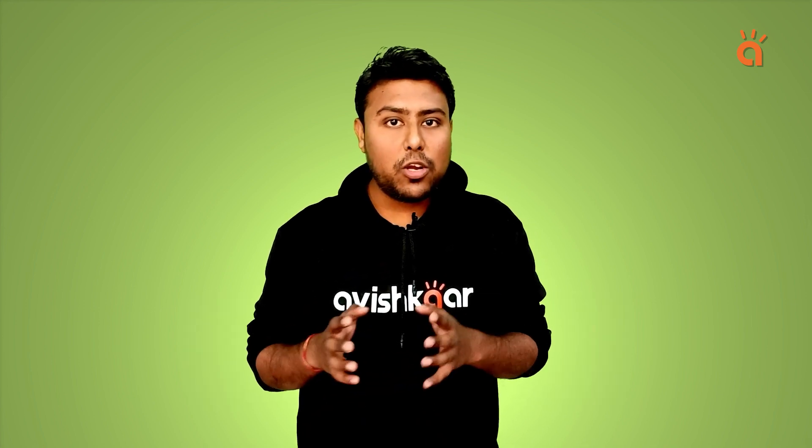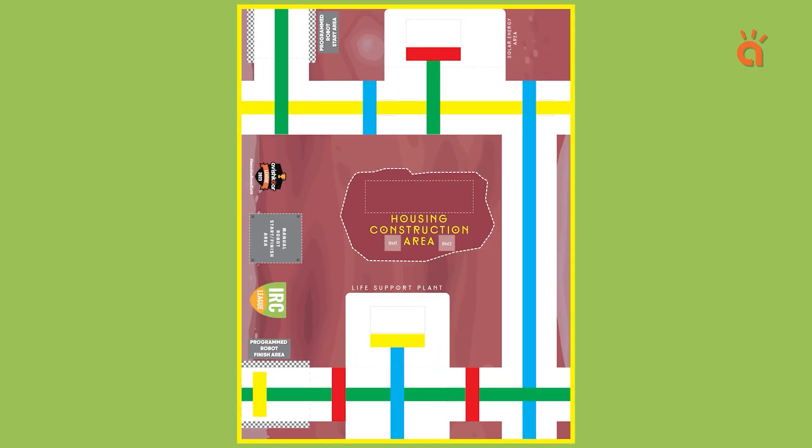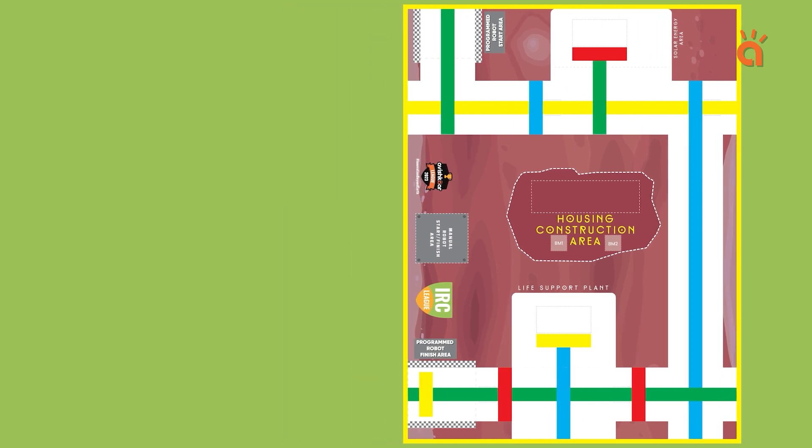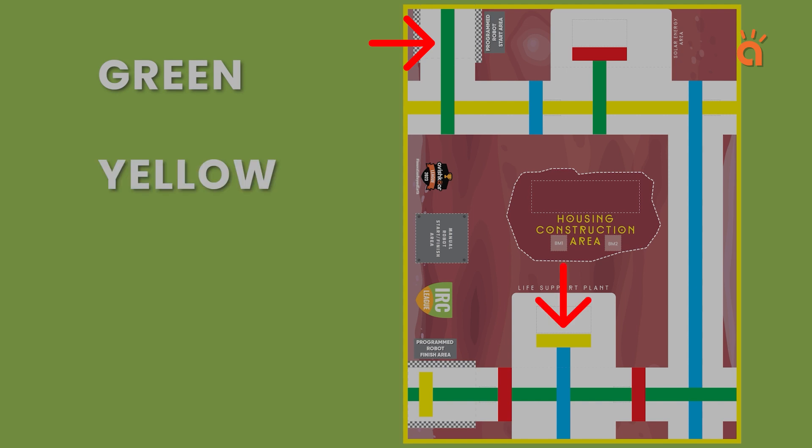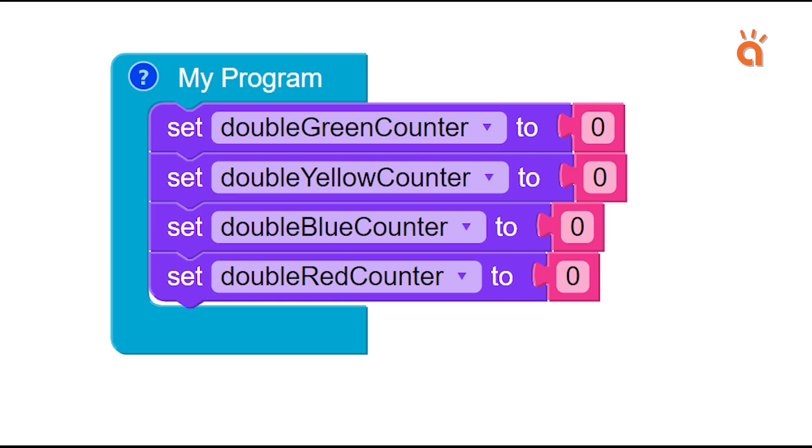Let's start programming our Autobot by understanding its algorithm first. In the senior arena, we have multiple colors, which means our robot will come across different color intersections. So let's first count the number of colors in our arena: green, yellow, blue, and red. There are four colors in this arena. So we will create four different variables for each color intersection.